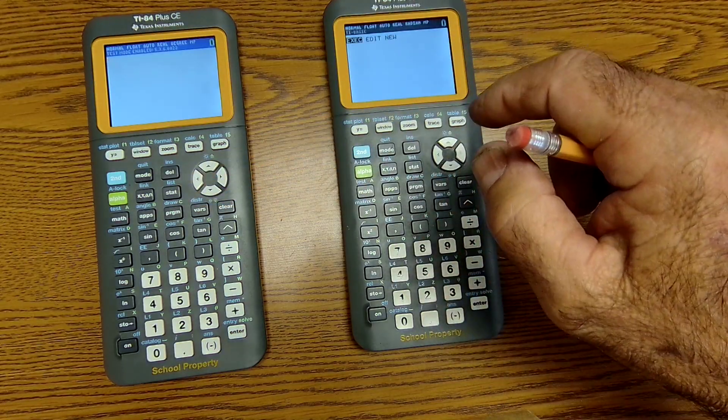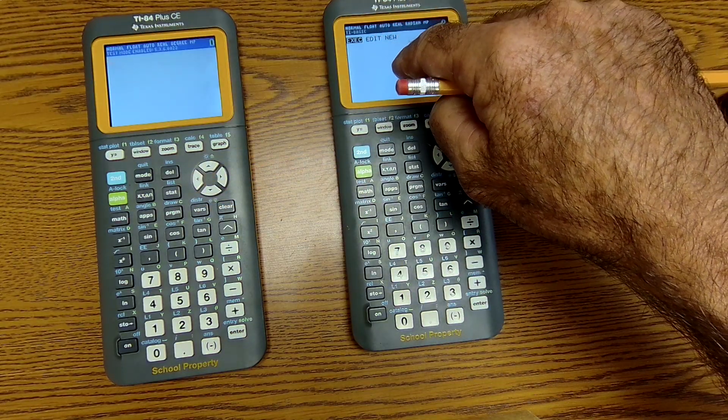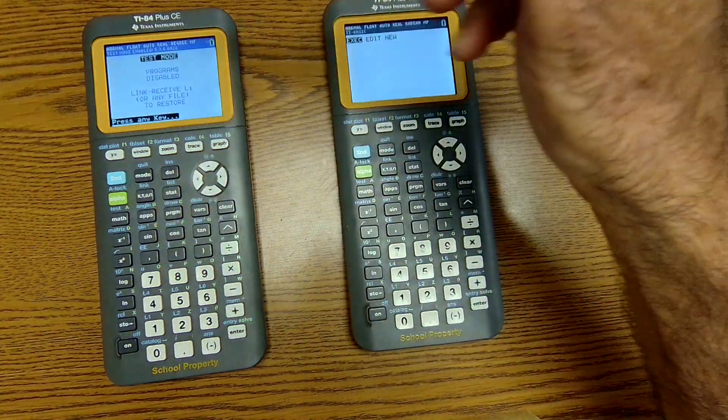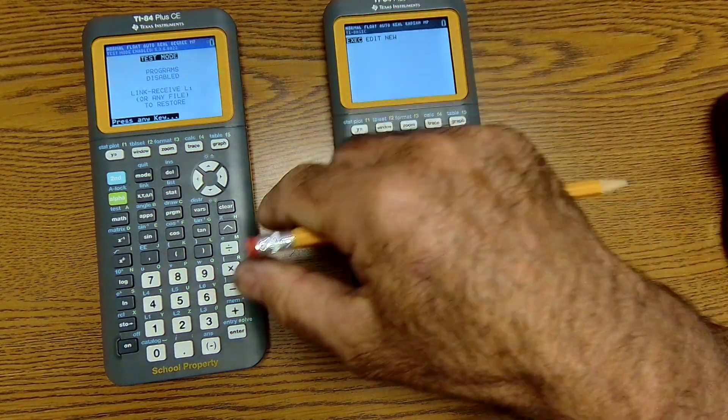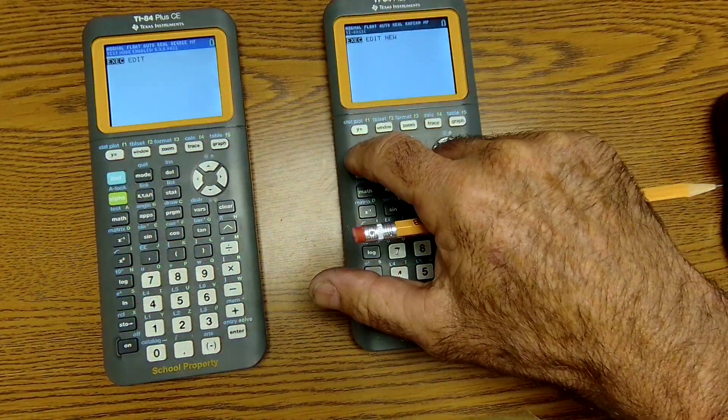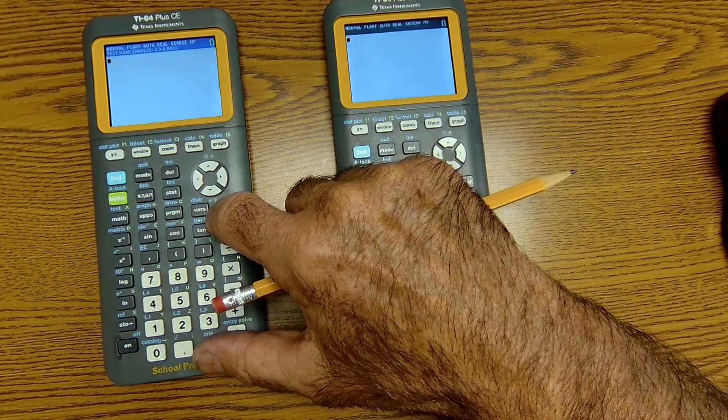So let me quit that. The other big difference is under program, right here. If I hit program, I could edit programs here. Program right here, it is telling me programs are disabled. So that's the big difference. Let me clear out of there.